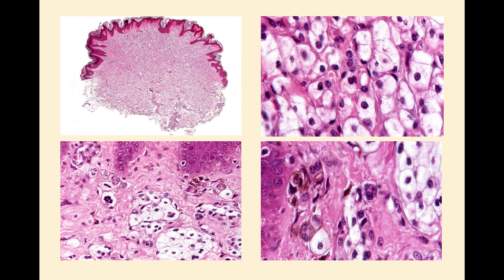This one's quite exciting because this was the very first balloon cell nevus I ever saw, going back somewhere between 30 and 40 years — a historical case for me. This one is almost 99% dermal and composed totally of balloon cells. So it would be very hard to distinguish this from a xanthomatous process until, after really careful searching, I managed to find a little bit of more conventional nevus with abundant melanin pigmentation. So I was quite happy that this was a balloon cell nevus.